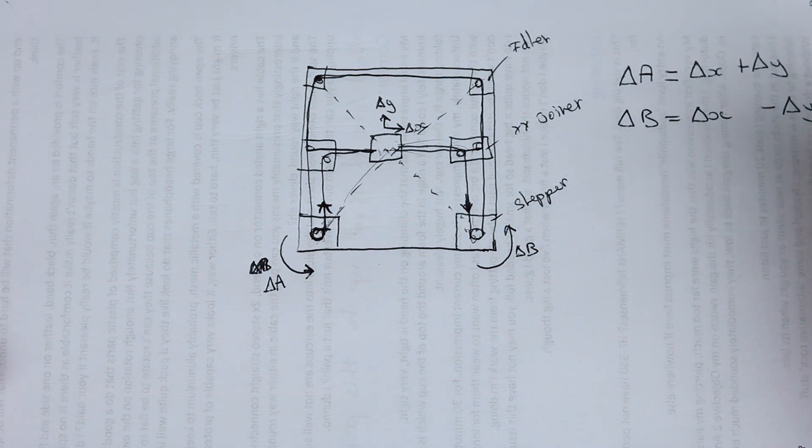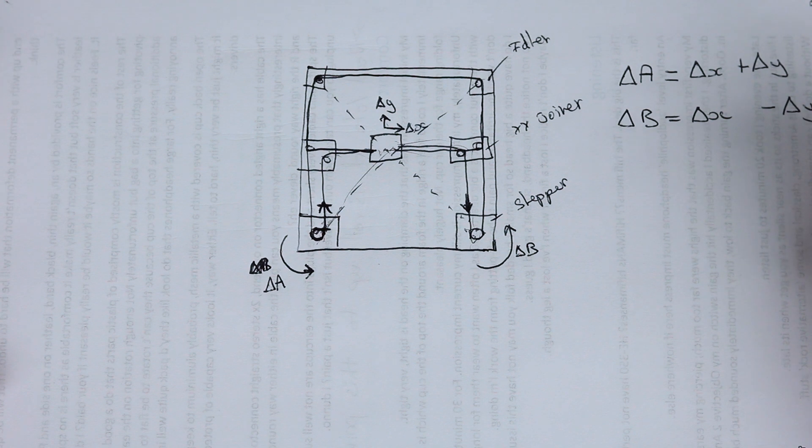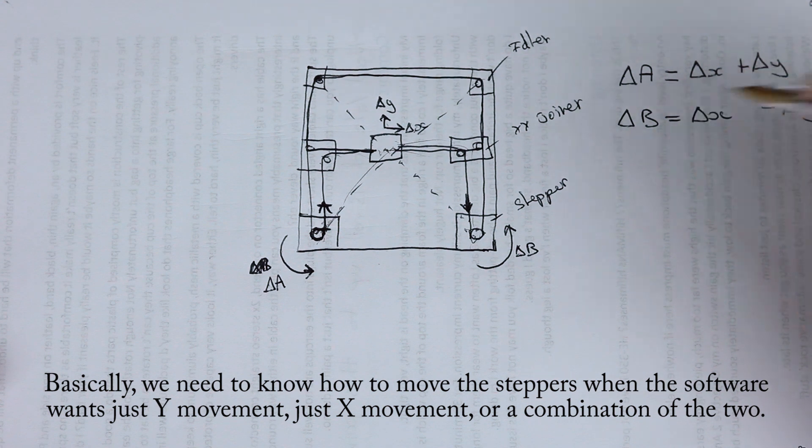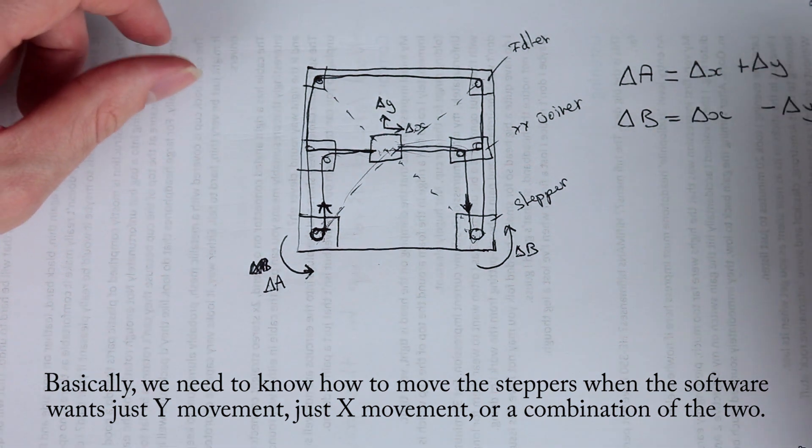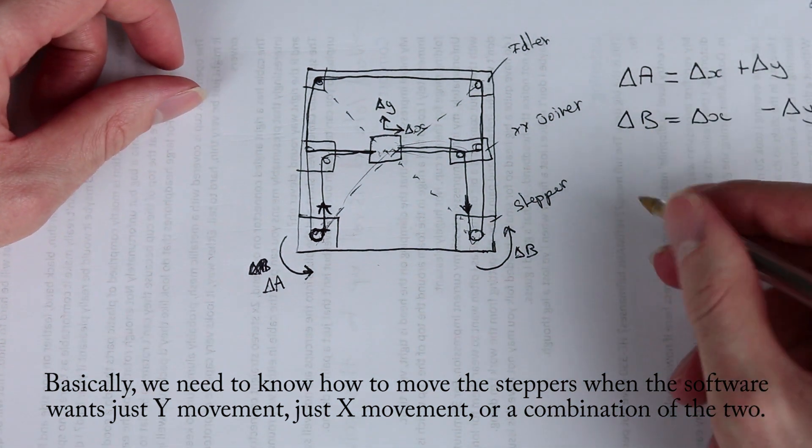So now all we have to do is rearrange these to find out how a change in X results in delta A and a change in Y results in delta B. So how do we do that? Well, we can just rearrange.